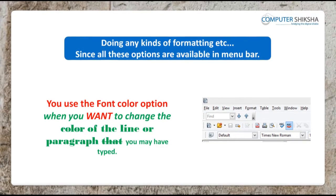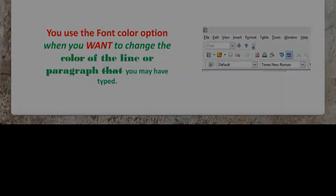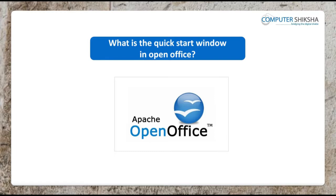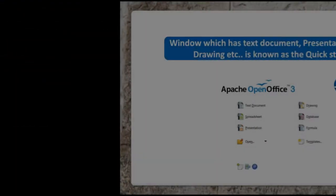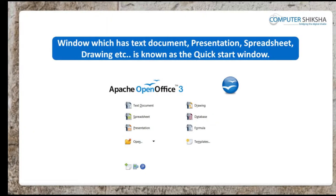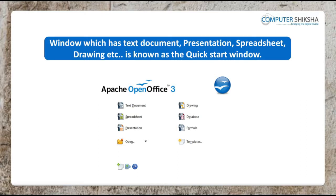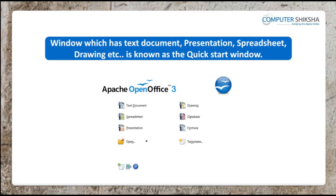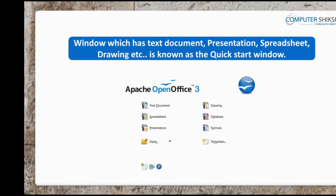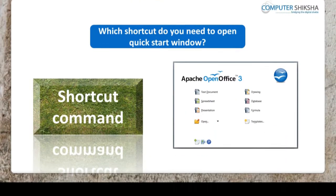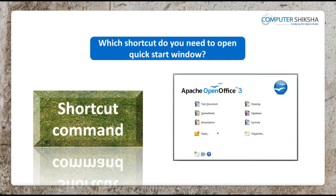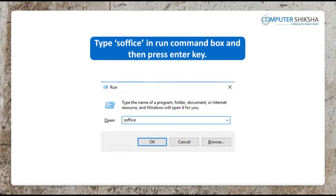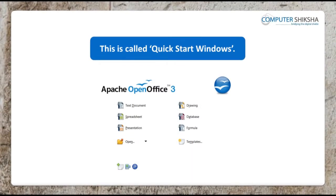Since all these options are available in the menu bars, which is the Quick Start window in OpenOffice? The window which has options for text documentation, presentation, spreadsheet, drawing, database, etc. is called the Quick Start window. Which shortcut command do you need to use to open the Quick Start window? By typing 'soffice' in the Run box and pressing Enter, you see the Quick Start window, which shows you all the components of OpenOffice.